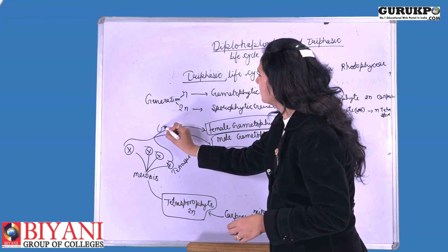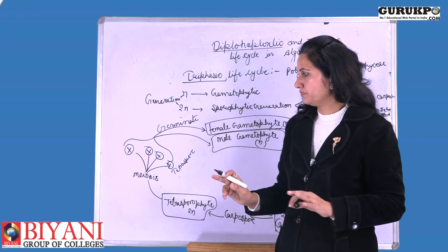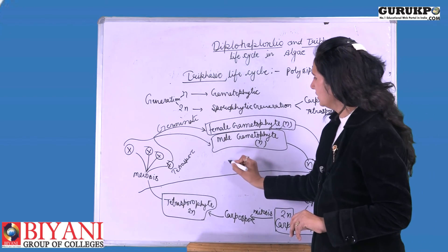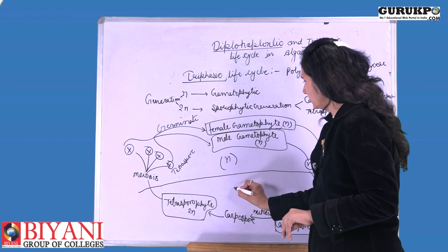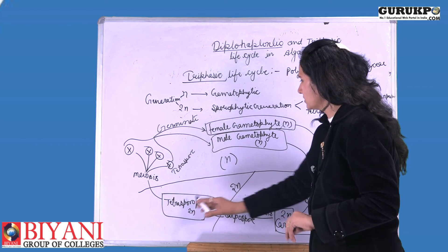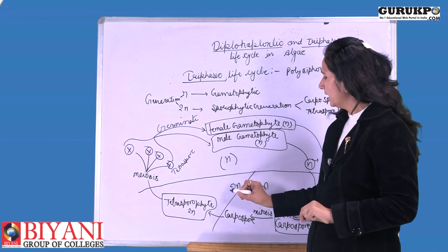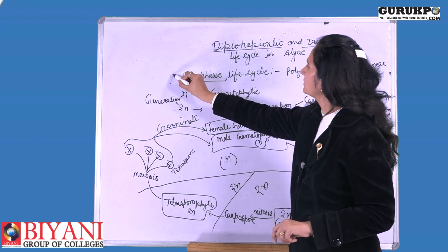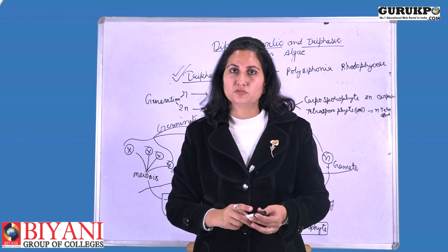The tetraspores are haploid and after germination they form female and male gametophytic plants. So we can see that this portion represents the haploid or gametophytic generation, and this area represents the diploid or sporophytic generation, which is further divided into two parts. Three generations are found — one is the haploid generation and two are the diploid or sporophytic generations. This is why such a life cycle is called the triphasic life cycle, and it is an important feature of members of Rhodophyceae.